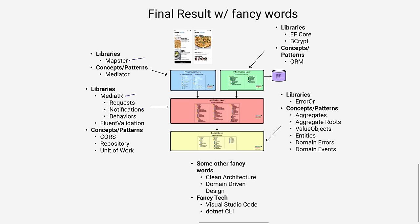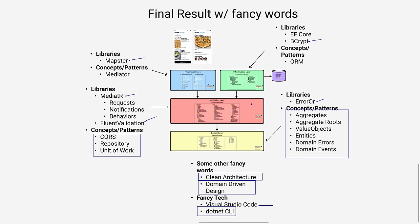If you've already heard of clean architecture, you're familiar with this diagram. It's sometimes called clean architecture, onion architecture, ports and adapters, or hexagonal architecture. Even though they have different names, they're variations of the same core concept where you have your domain in the center, your core application logic in the center, and infrastructure details like the database or web clients sit on the outside.